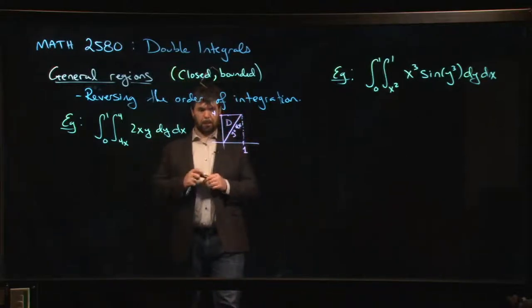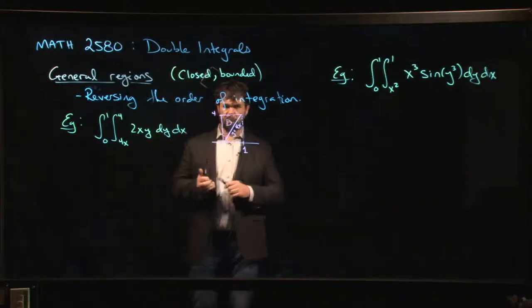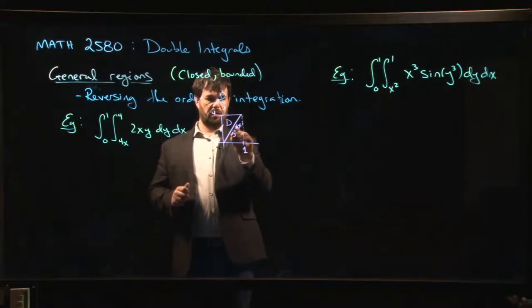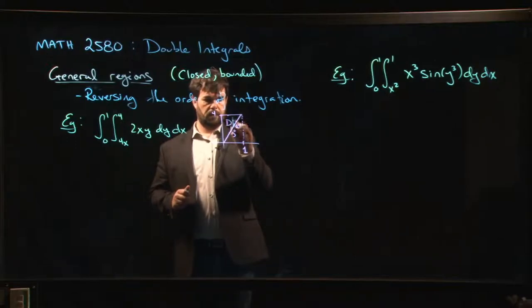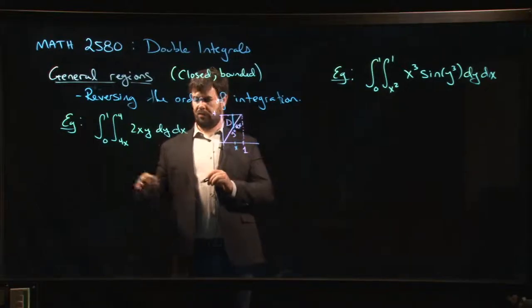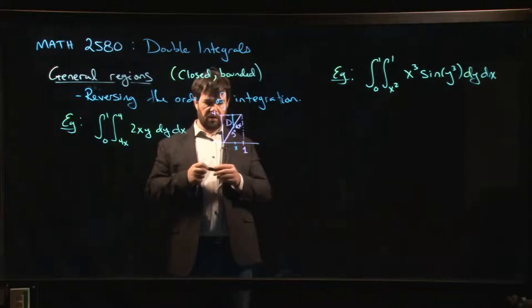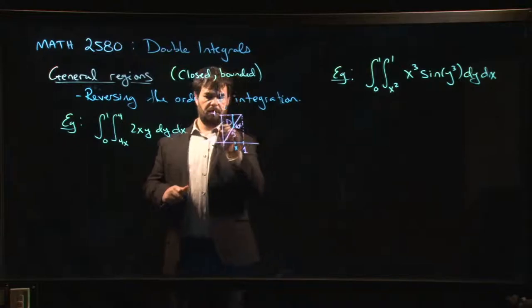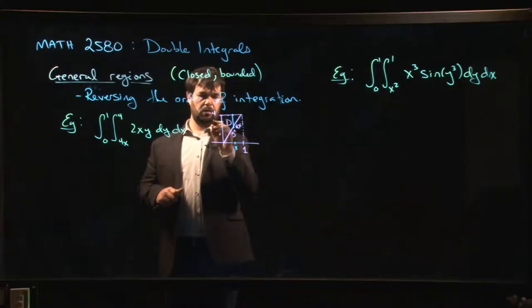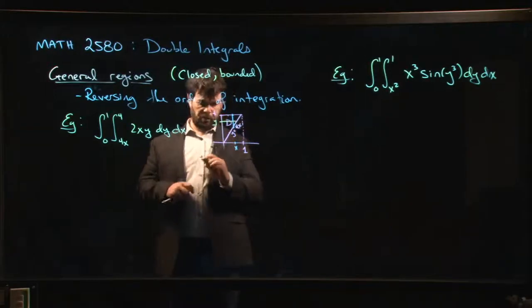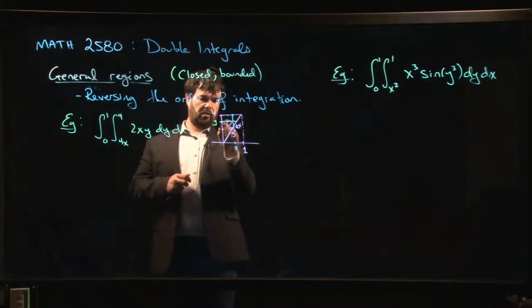One way that you might even want to think about this is think about drawing these lines. So as we've got it, we start here. For a given x value we start at 4x, we end at 4. 4x to 4. Now what if you were going the other way? What if you wanted to fix a y value and move horizontally? What are the range of x values?